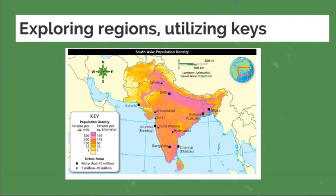We've differentiated countries and regions previously in our first two weeks. We're going to be utilizing the key to dissect and indicate information about migration by understanding the aspects presented in these multi-color coded maps.